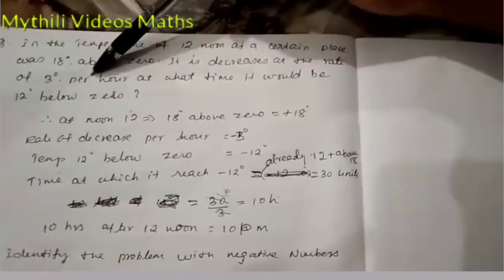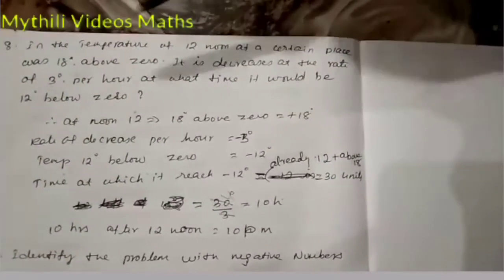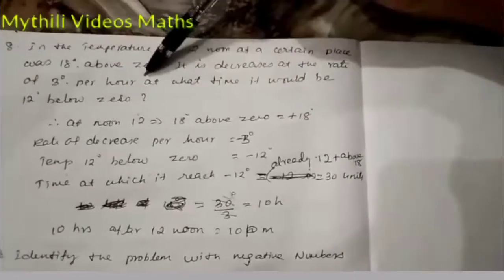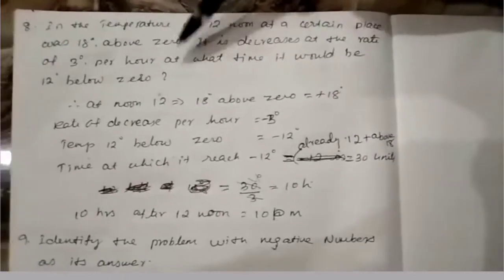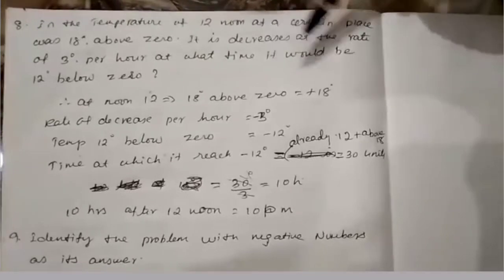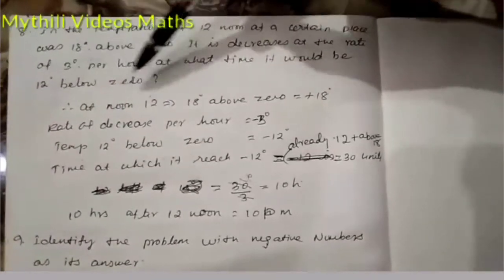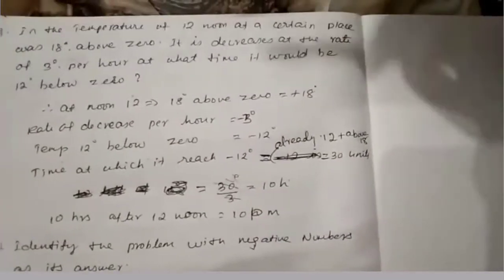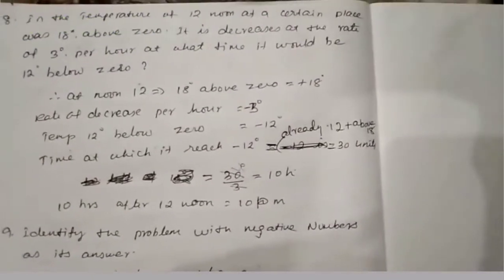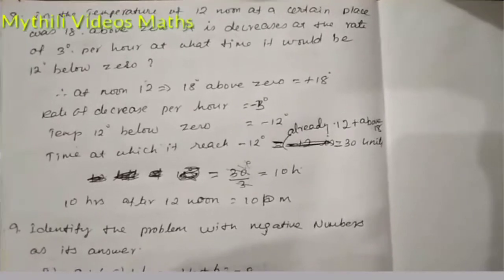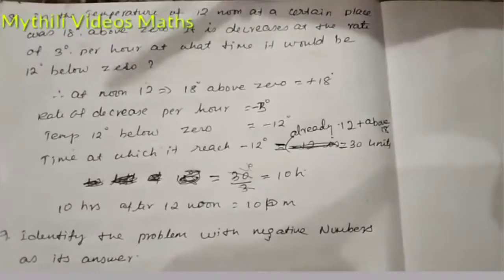of 3 degrees per hour. At what time would it be 12 degrees below zero? So we have to find at which time it will reach 12 degrees below zero. That is the main question. Now we'll